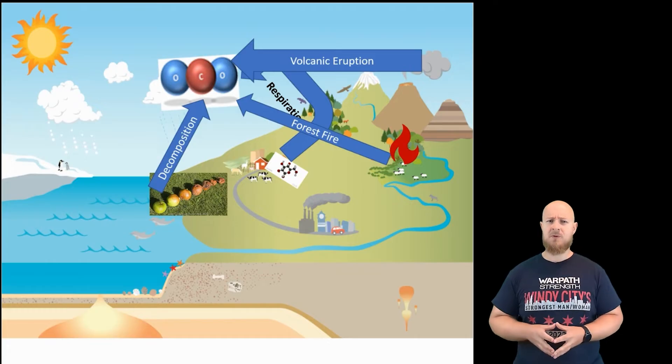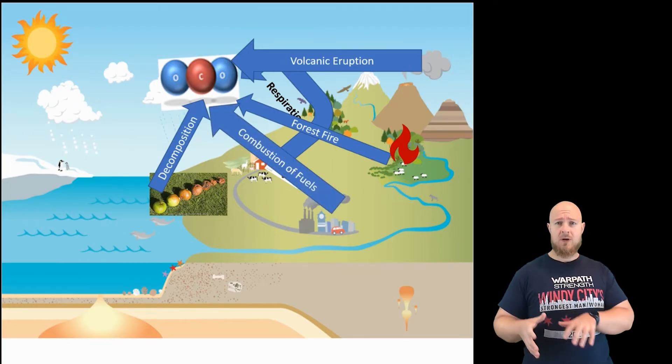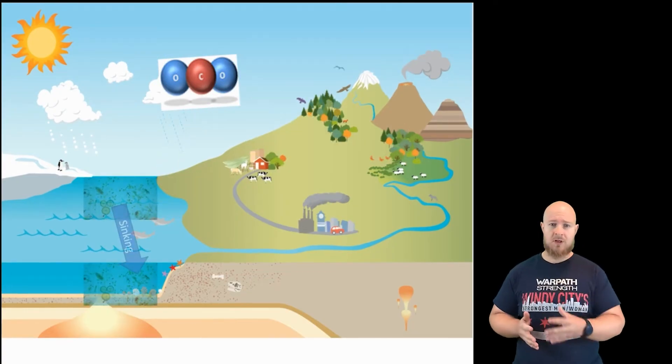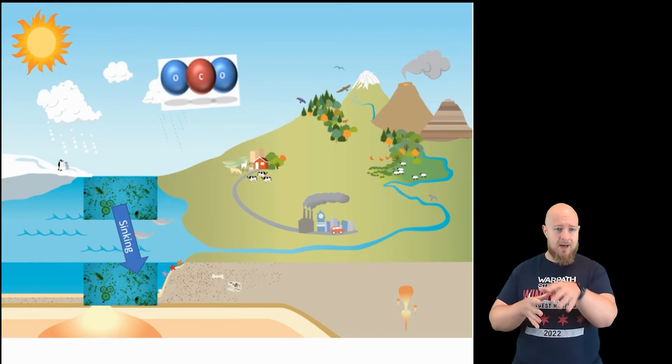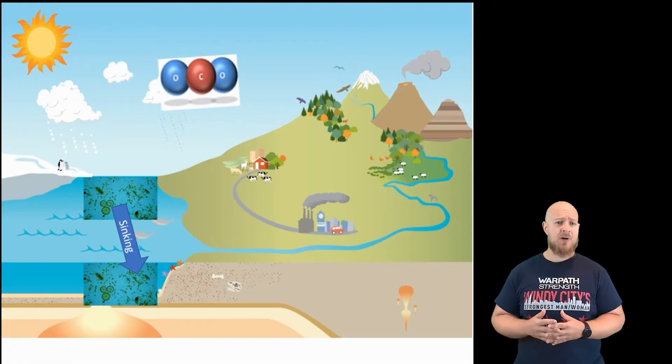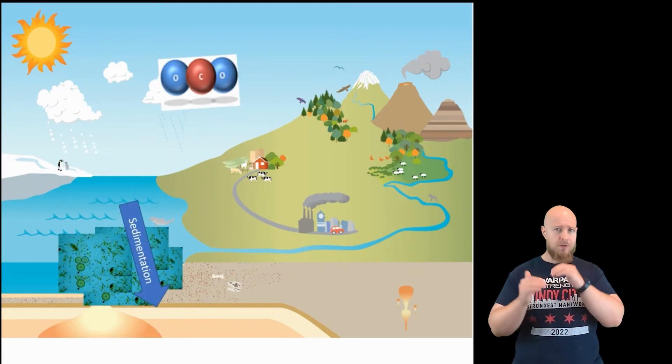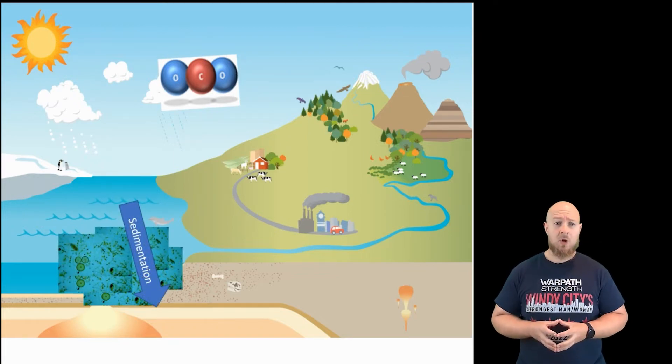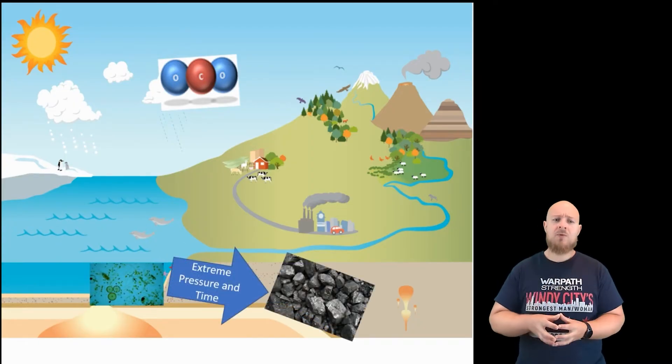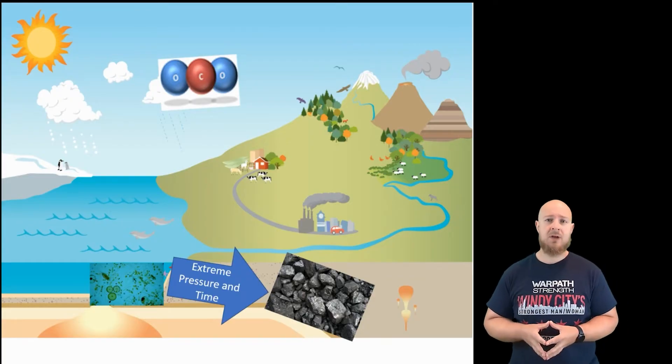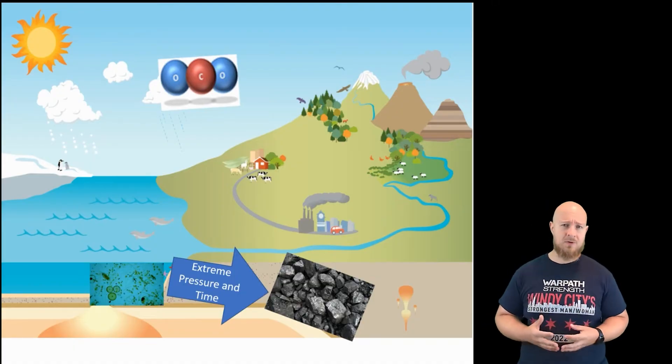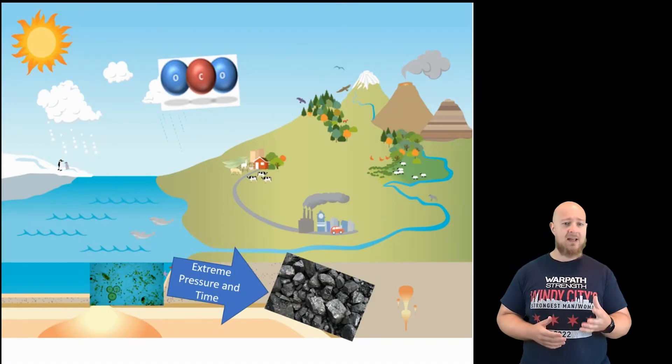But how did the fossil fuels get into the ground? Well, for that we have to go back to our phytoplankton, plants, and decomposing dead stuff. After some time, those organisms, or at least some organic compounds within those organisms, sink to the bottom of the ocean and get buried. This is a process called sedimentation, where layers of material build up on top of each other. Over extremely long periods of time, this sedimentation causes extreme amounts of pressure, which produces rocks and a few other compounds. As a result of this sedimentation and compression, we get the fossil fuels that we use for energy: coal, oil, and natural gas.